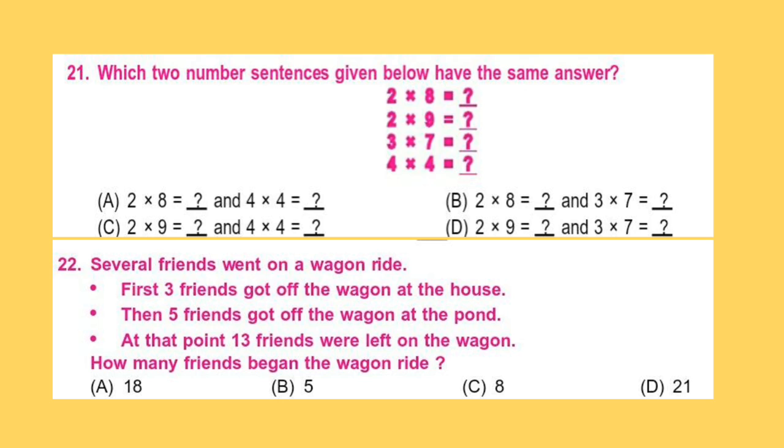Question 22. Several friends went on a wagon ride. First three friends got off the wagon at the house. Then five friends got off the wagon at the pond. At that point, 13 friends were left on the wagon. How many friends began the wagon ride?